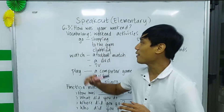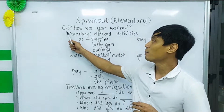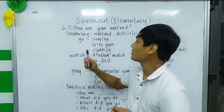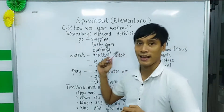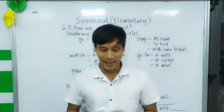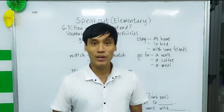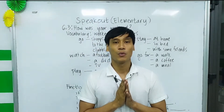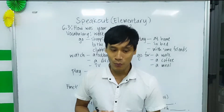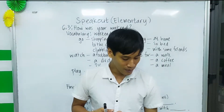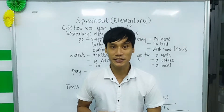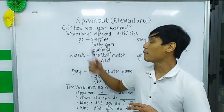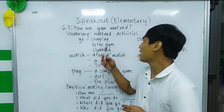After answering those questions, we will continue with today's chapter. It is chapter 6.3 and the title is 'How Was Your Weekend.' If you have your book with you, you can open it up and follow along. Open to page 62.